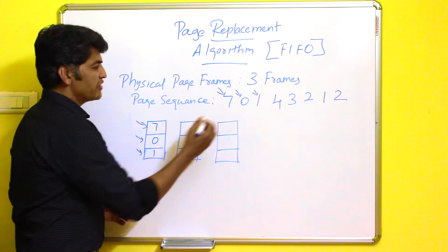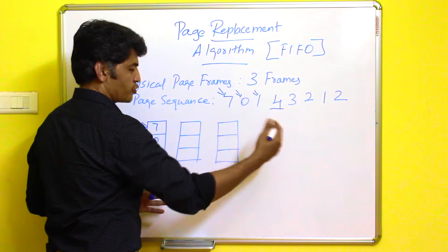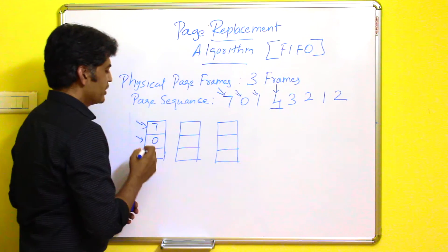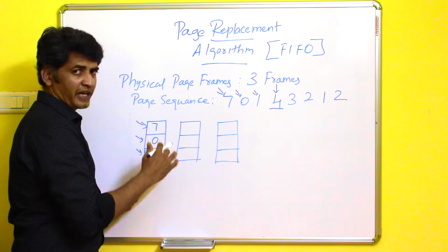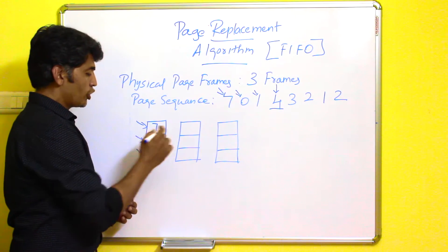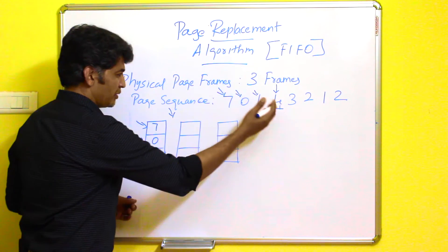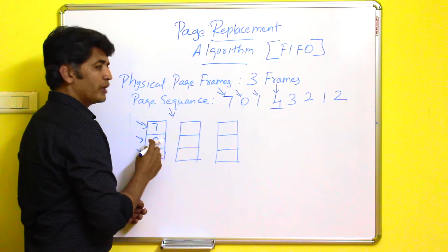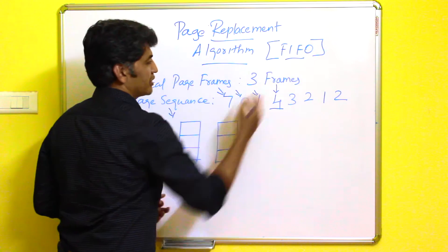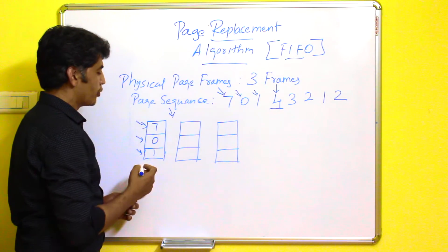Now after page number one, there is a newer page in the sequence — another page required for the process to be executed. This is the newly required page. At that time, the operating system will verify whether the page is in the physical frames or not. Page number four is not there in the physical frame, so automatically it will create a page fault. After the page fault, it needs to transfer the page to a physical frame. The operating system needs to identify a free frame — and that is where the algorithm comes in: First In, First Out. Of these three pages, which one entered first? That will be identified by the operating system.